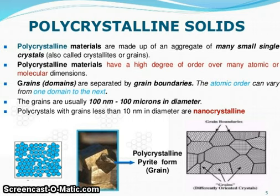Polycrystalline materials are made up of an aggregate of many small single crystals, also called crystallites or grains. Polycrystalline materials have a high degree of order over many atomic or molecular dimensions. Grains or domains are separated by grain boundaries. The atomic order can vary from one domain to the next. The grains are usually 100 nanometers or 100 microns in diameter. Polycrystalline with grains less than 10 nanometers in diameter are nanocrystalline. Polycrystalline pyrites form grains. You can see the grain boundary.